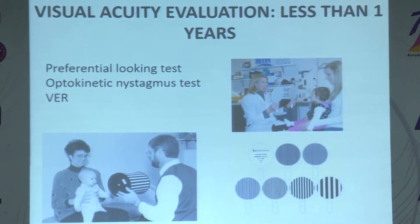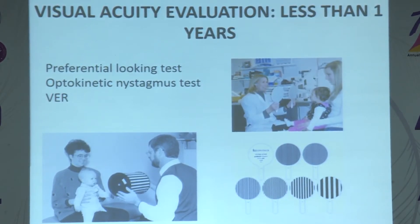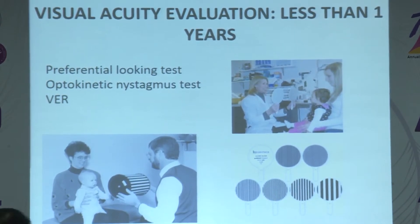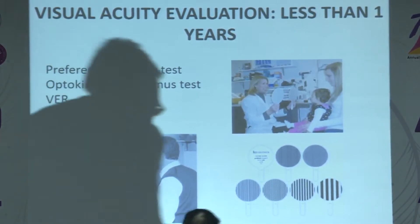For children less than one year, it is really tricky. The preferential looking test is very useful in this age group. Optokinetic nystagmus and VEP can also be used.